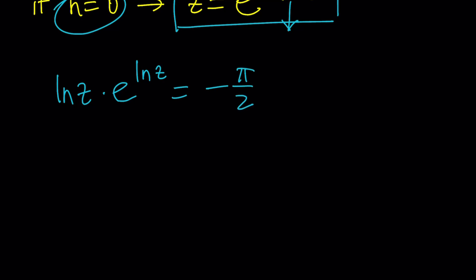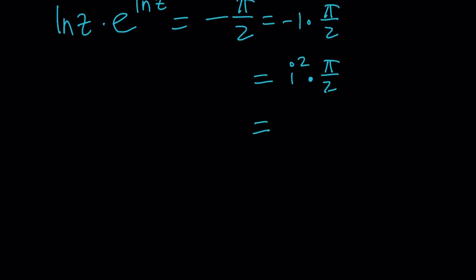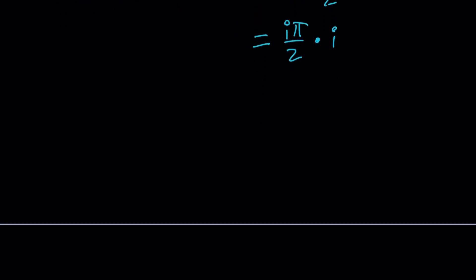Now here's the fun part, here's the mathematical part. I'm going to write this as negative 1 times π over 2, and then I'm going to write the negative 1 as i squared times π over 2, and then I'm going to separate the i squared into i times i and leave one of the i's with π over 2, so write it as i π over 2 times i. I'm sure you recognize i π over 2 if you've done some complex numbers.